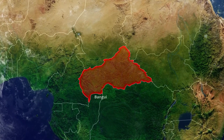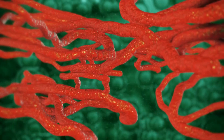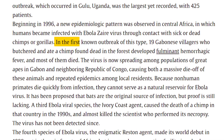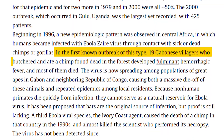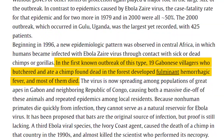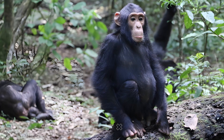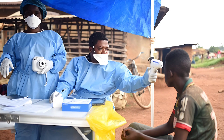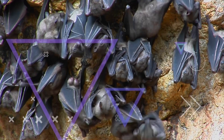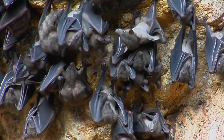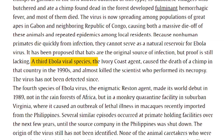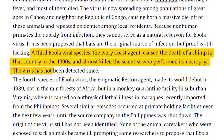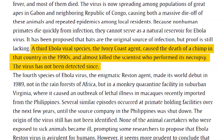A new pattern emerged in Central Africa, where humans were infected with the Ebola Zaire virus after contact with sick or dead chimps or gorillas. In the first known outbreak of this type, 19 people in Gabon who butchered a dead chimp became infected and most died. The virus also spread among gorillas and chimps in Gabon and the Republic of Congo, causing a die-off of these animals and repeated outbreaks among local people. Although bats are suspected to be the original source of infection, there is no solid proof. A third Ebola species, discovered in the Ivory Coast in the 1990s, killed a chimp and nearly killed a scientist who examined it. This virus hasn't been detected since.